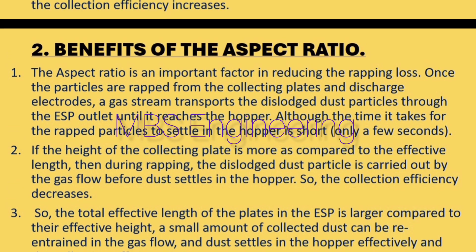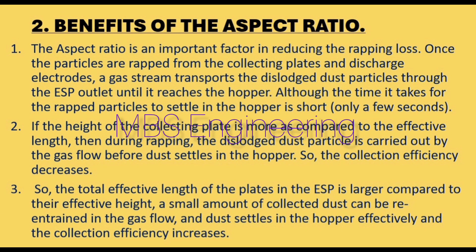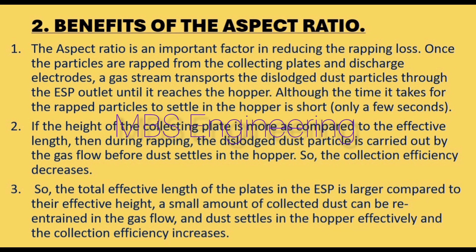Point 2: If the height of the collecting plate is greater compared to the effective length, then during rapping, the dislodged dust particle is carried out by the gas flow before it settles in the dust hopper, so the collection efficiency decreases. Point 3: So, if the total effective length of the plates in the ESP is larger compared to their effective height, a small amount of collected dust is re-entrained and the dust settles in the hopper effectively, increasing collection efficiency.